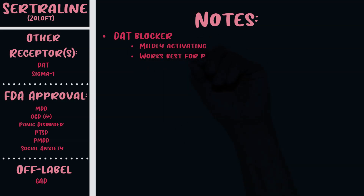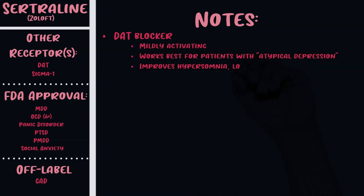The DAT blockade helps remember that Zoloft is mildly activating and works best for patients with atypical depression. Atypical depression features weight gain, hypersomnia, interpersonal rejection sensitivity, and mood reactivity. So Zoloft is the SSRI that works best for patients with hypersomnia, low energy, and mood reactivity. The downside — or upside depending on how you view it — is it can cause some over-activation, especially in patients with panic disorder.